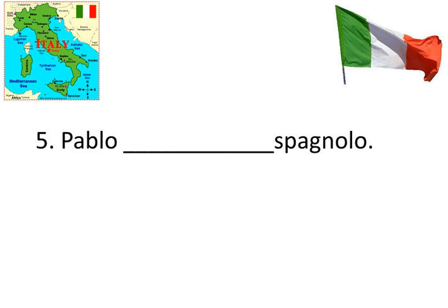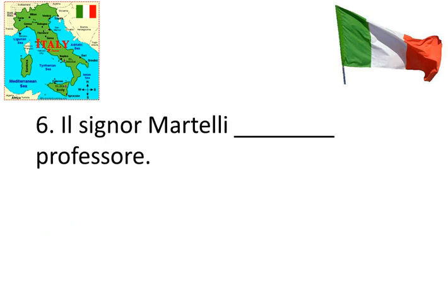Numero 5: Pablo blank spagnolo. Pablo is Spanish. This is going to be the same as number one and two — Pablo is a he, it's a lui, therefore we need the lui form of essere. Pablo è spagnolo. Numero 6: Il Signor Martelli blank professore. Mr. Martelli is a professor. Same thing here — Mr. Martelli, well that's still lui. One person, lui, that's a he, therefore I'm going to say è. Il Signor Martelli è professore.